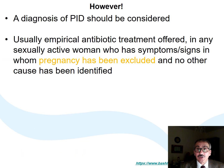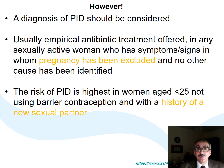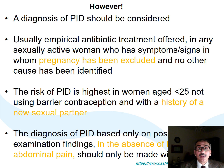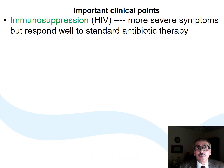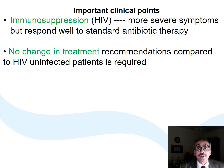On suspicion, we should start empirical antibiotics after exclusion of pregnancy and other clinical causes. Young ladies with new sexual partners are at high risk. Lower abdominal pain and tenderness are important clinical findings helping the diagnosis. Although immunosuppressed patients show more severe symptoms, we do not need to treat them differently.